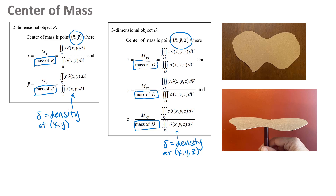The numerator on all of these is an integral that has an extra variable in it. For the x-coordinate of center of mass, there's an extra x. For the y-coordinate, there's an extra y. Similarly in three dimensions, an extra x, y, or z. These numerators are called the first moment with respect to an axis or a plane — a calculation describing the tendency of an object to rotate about an axis or a plane.